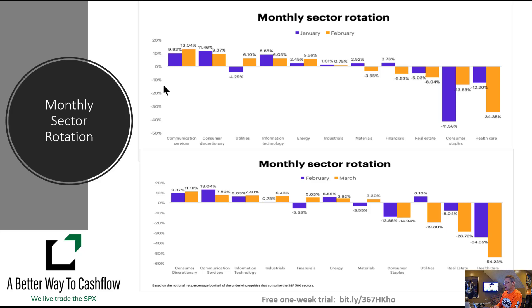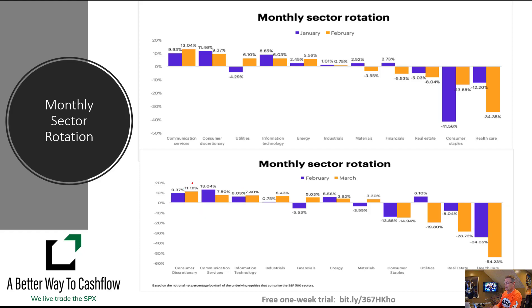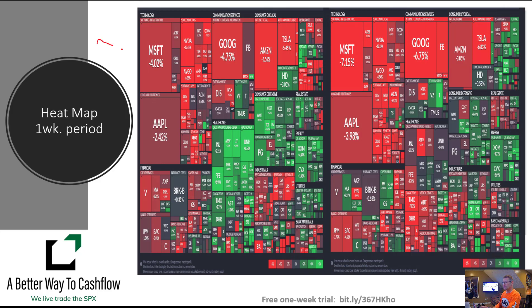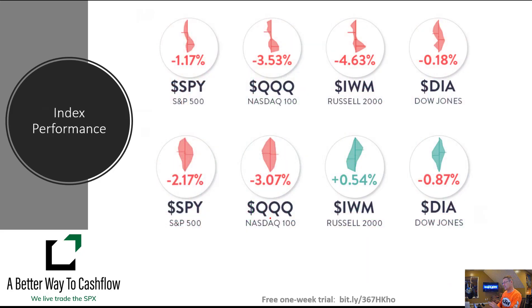Looking at the monthly sector rotation — we'll have a new update in about a week and a half — it still shows healthcare as the most valued area, and communication services has been the area where I've found the most shorting opportunities. Looking at the heat map on a week-to-week basis, comparing two weeks ago to last week's price action, the only substantive change is just a little more weakness across the board. We already had a pretty mixed bag and it's become a little more universally weak this past week.